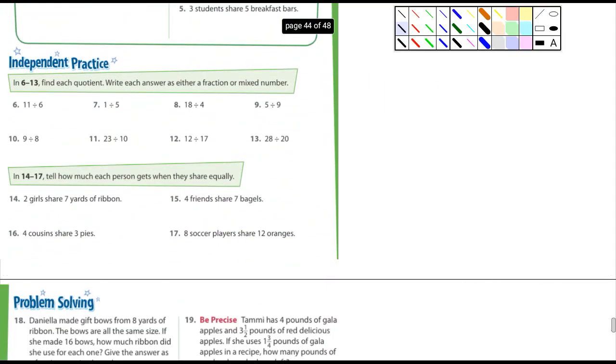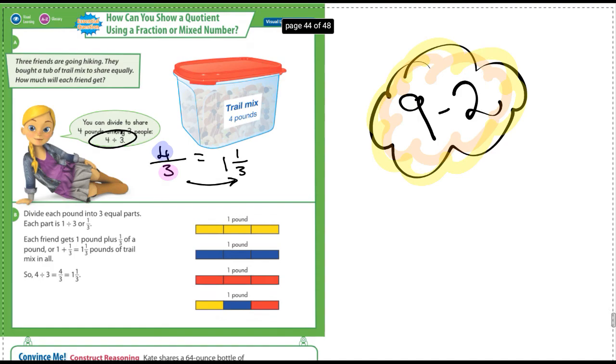Okay. Independent practice real quick. Find each quotient. Write each answer as either a fraction or a mixed number. Okay, well, 11 being divided by 6. That's 11 over 6. It says a fraction or a mixed number. Well, in this case, how many times does 6 fit into 11? Once with 5 being left over and the denominator stays the same. So 11 over 6 or 1 and 5 sixths. So let's look at number 12 here. 12 divided by 17. That's going to be 12 over 17. That's not an improper fraction. There's nothing else we can do with that. We can't change that into a mixed number because the numerator, what's on top, is not larger than the denominator.